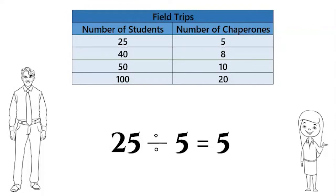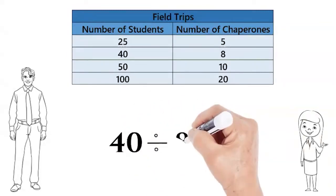Now let's check the other rows in the table to make sure the rule is true for all of them. 40 divided by 8 is 5, so on this field trip there were also 5 students for every one chaperone.